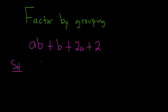When you're doing factor by grouping, you just pick two terms. So the natural thing to do is to pick these two here. What is the greatest common factor? What do they have in common that we can pull out? Well, B.